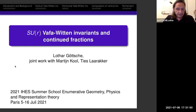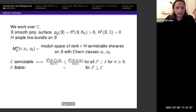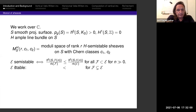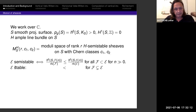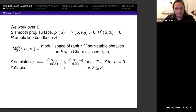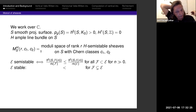This is joint work with Martijn Kohl and Thies Larrake. I work over C. I consider a smooth projective surface with geometric genus positive, so with a holomorphic 2-form and first cohomology with that coefficient zero. There is an H-ample line bundle on S, and we can look at the moduli space M R C1 C2 of rank R, H-semistable sheaves on S with Chern classes C1 and C2.